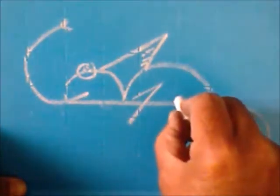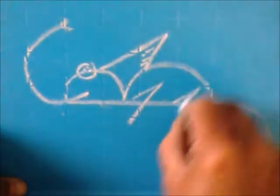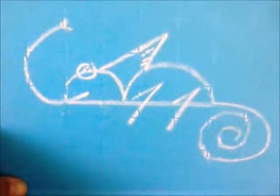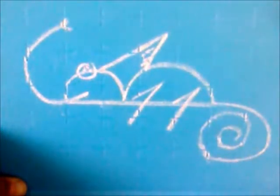Draw a pointed line here, draw a pointed line here to show the legs. This is the simplest visual symbol of a chameleon. Thank you.